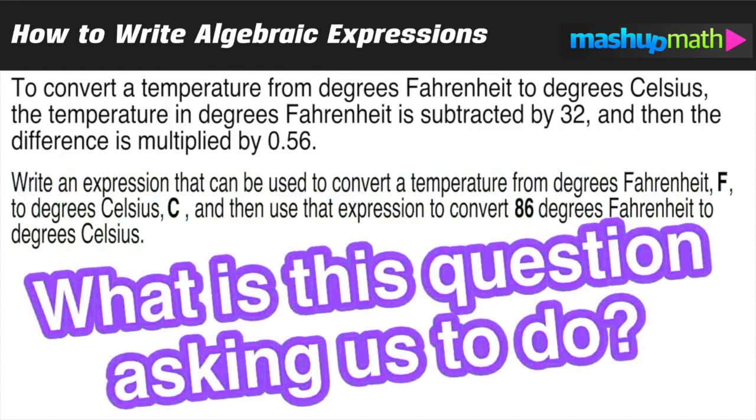Before we do anything, let's stop and think about what's going on here. What is this question asking us to do? If we look at the second part, we have to do two things: write an expression that can be used to convert from Fahrenheit F to Celsius C, and then use that expression to convert 86 degrees Fahrenheit to degrees Celsius.